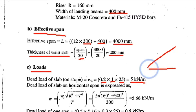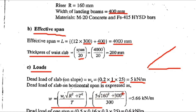We have to convert the inclined load to the horizontal direction. Using the formula W_horizontal equals W_slope multiplied by √(R² + T²) divided by T: W equals 5 into √(160² + 300²) divided by 300, giving 5.66 kN/m. This is the dead load on horizontal span.